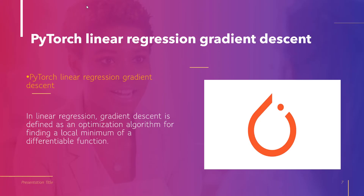Now let's discuss PyTorch linear regression gradient descent. In linear regression, gradient descent is defined as an optimization algorithm for finding a local minimum of a differentiable function. It computes the gradient of the loss function to update the weights, decreases the loss, and finds the minima of the loss function.